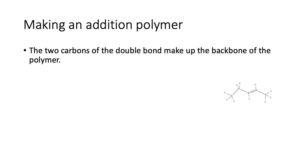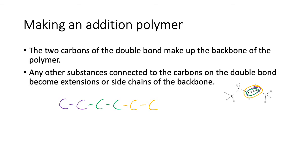The two carbons of the double bond make up the backbone of the polymer. So here we have the two carbons there, and those will be the backbone of the polymer. Just like we had before, here's the first two, here's the second two, and all of these are the carbons that are here. These two carbons make up the backbone of the polymer.